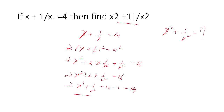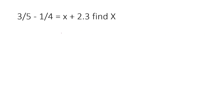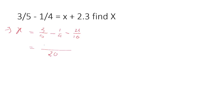Next: 3 by 5 minus 1 by 4 is equal to x plus 2 by 3. Find x. Rearrange to solve for x by separating x to one side.